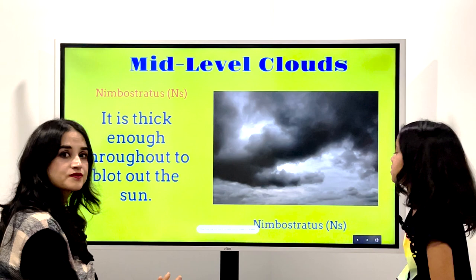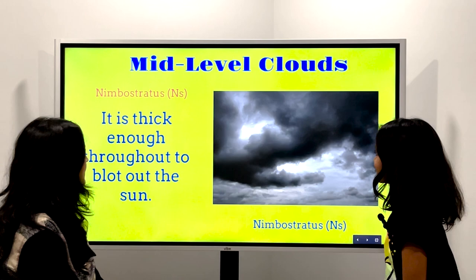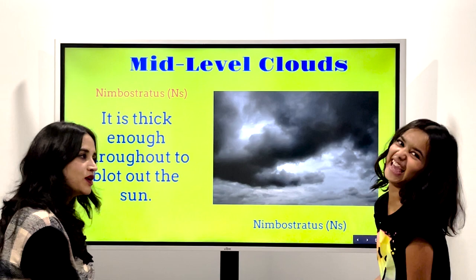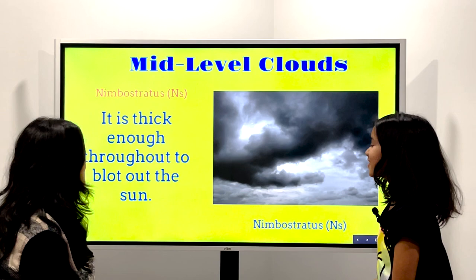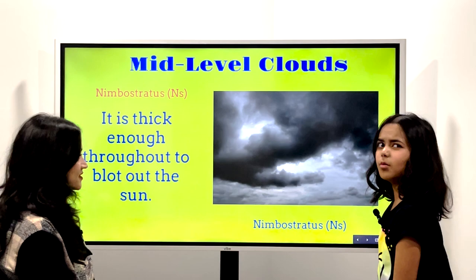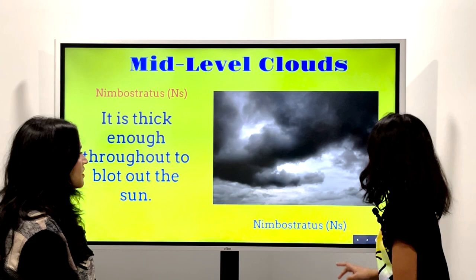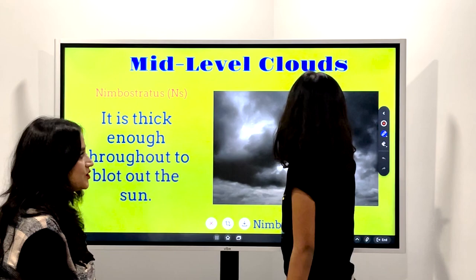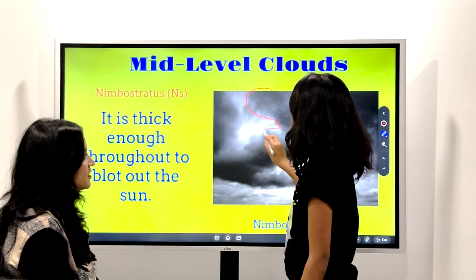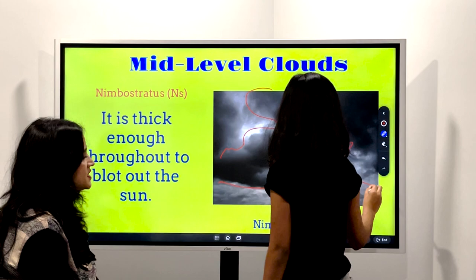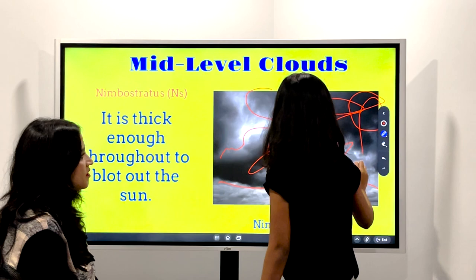The next one is Nimbostratus. It looks so scary. It is thick enough throughout to blot out the sun — it's actually almost a thunderstorm, or it is a thunderstorm. The black, rainy thunderstorm cloud. I'm just going to outline it because you can barely see the sky here — there is no sky. It looks like Halloween. It's November 4th.